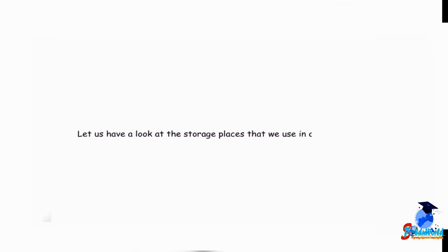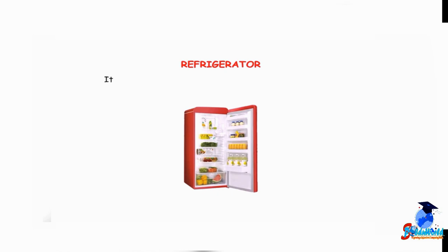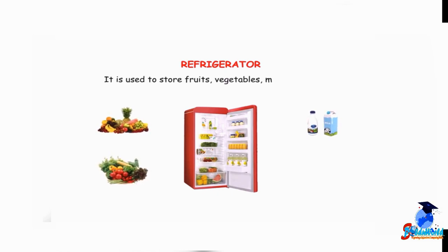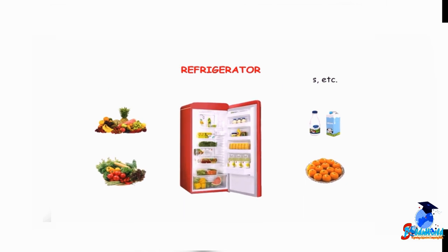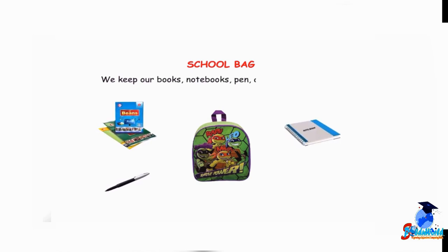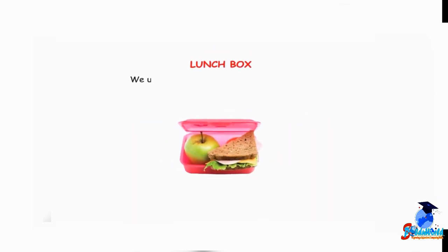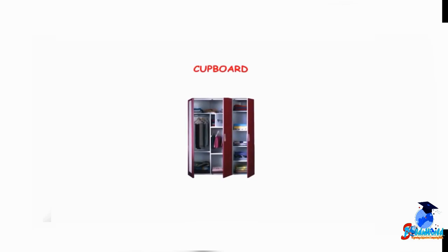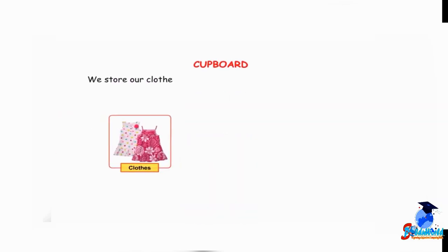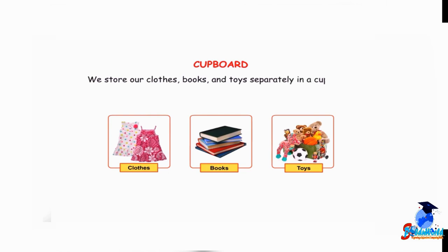Let us have a look at storage places we use in daily life. Refrigerator — used to store fruits, vegetables, milk, sweets, etc. School bag — we keep our books, notebooks, pen and pencil in it. Lunch box — used for keeping our lunch and snacks. Cupboard — we store our clothes, books and toys separately in a cupboard.